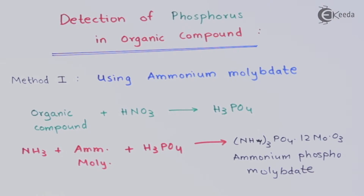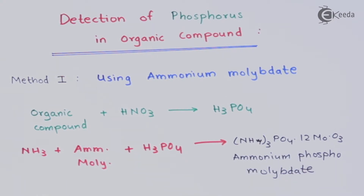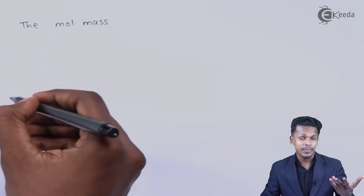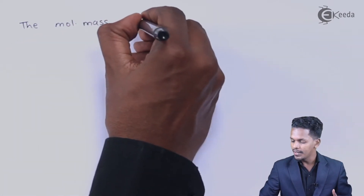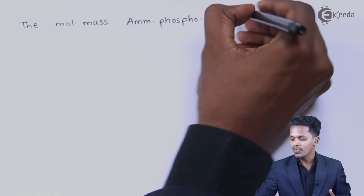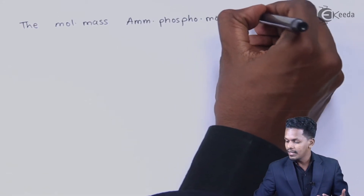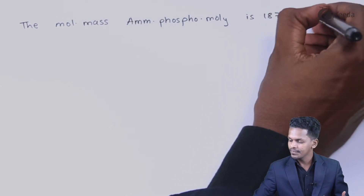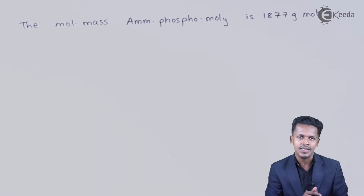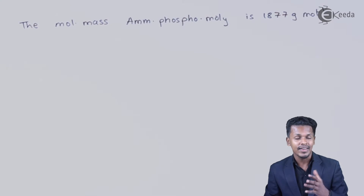This plays a very vital role in obtaining the percentage of phosphorus. It has been found that the molar mass of ammonium phosphomolybdate is 1877 grams per mole. Because of this, we can estimate the percentage of phosphorus. Suppose the organic compound we have taken is M grams.